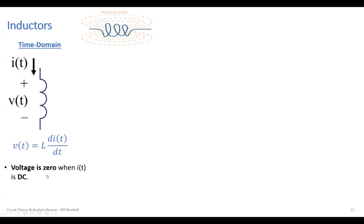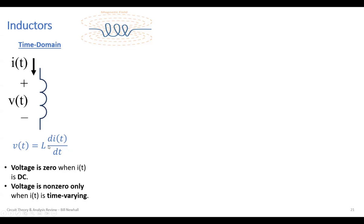The relationship between voltage and current is V = L dI/dt. That means voltage is zero when I(t) is DC — when I(t) is a constant value, its derivative is zero, so the voltage is zero. Voltage is only non-zero when I(t) is time-varying. An inductor allows DC to pass easily because there's no voltage across it, and as the frequency of a sinusoid increases, a voltage is created across the inductor because the derivative of the current increases. So an inductor tends to allow DC to pass and block AC currents.